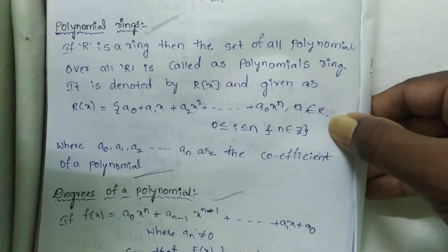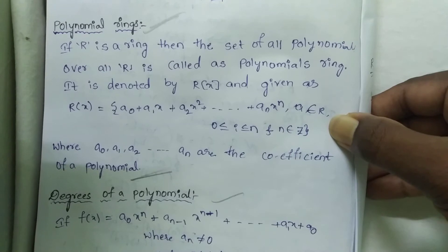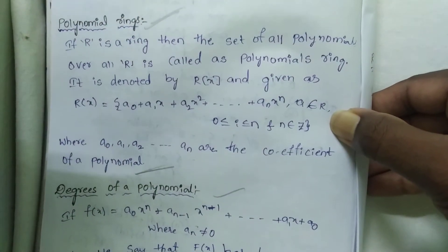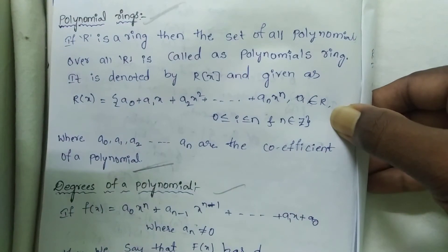It is denoted by R(x) and is given as R(x) = {a₀ + a₁x + a₂x² + ... + aₙxⁿ, where aᵢ ∈ R, 0 ≤ i ≤ n, and n ∈ ℤ}.